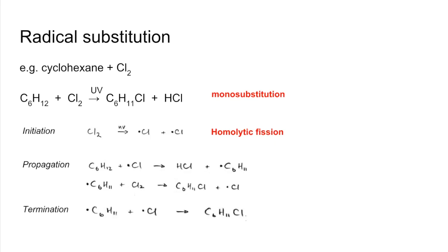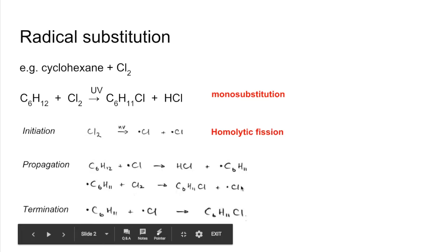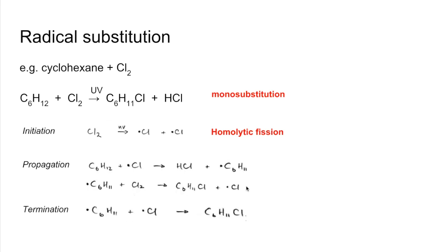Now if the chlorine was present in excess then the chlorine radicals that are reformed in the second propagation step they could then go and start stripping out the next hydrogen and you get another pair of propagation steps and that can continue ultimately till all the hydrogens have gone.